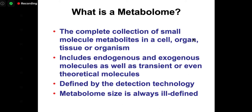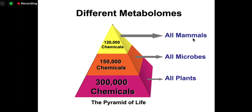This is a rough estimate on the number of metabolites we know for different kingdoms of life. If we look at all plants, there's somewhere between 250,000 to 300,000 — it's probably more than that. If we look at the universe of microbes, we can see perhaps 150,000 products. Any given microbe maybe produces around 5,000 metabolites or compounds, but because they are in such diverse niches around the world, the total number of the microbiome metabolome is quite large. Mammals, including humans, have relatively smaller metabolomes — still on the order of about 120,000 chemicals or metabolites enumerated so far.